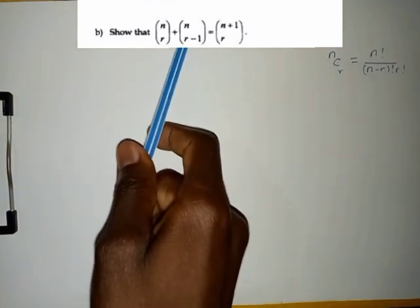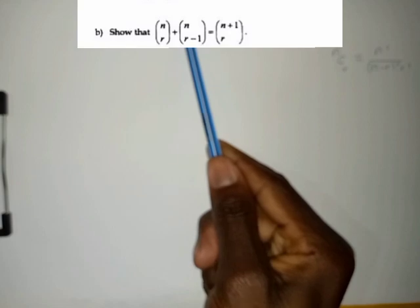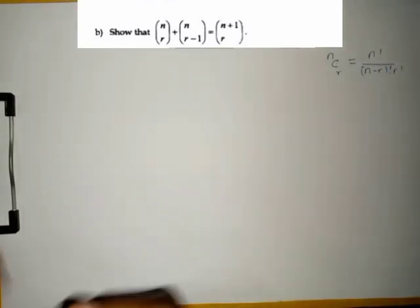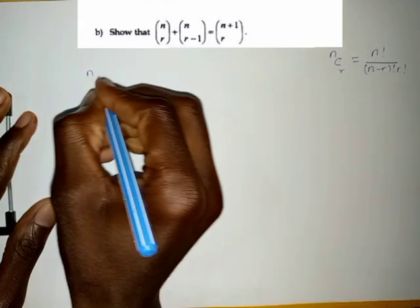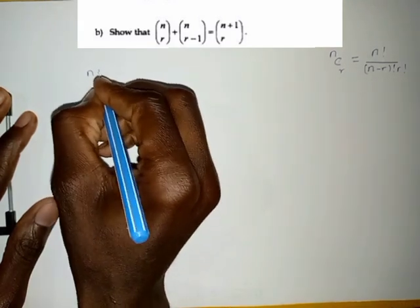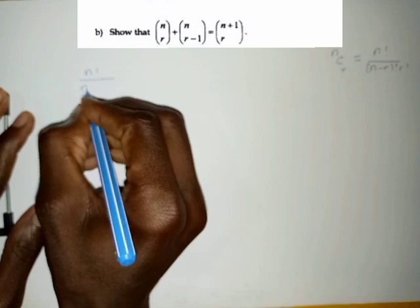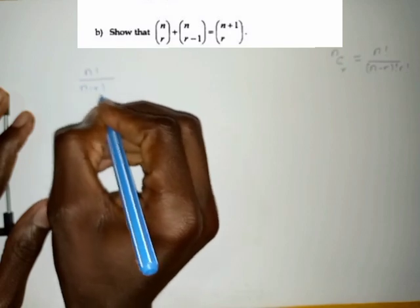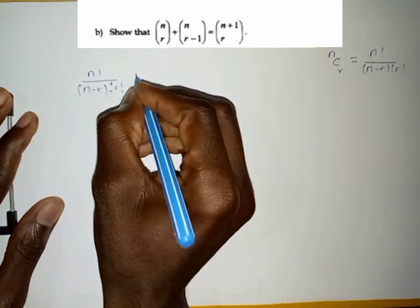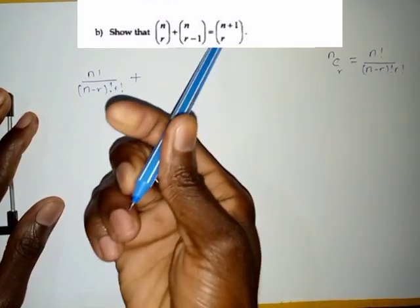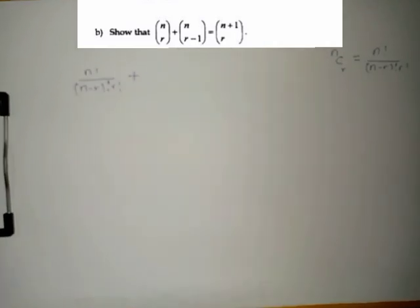If you don't have anything in the middle, this is just one and the same as that, meaning that what you have here can also be expressed like that. So we are going to have n factorial on this part, over n minus r factorial, r factorial, plus. Even on this part, what you have on the down part stands for n.